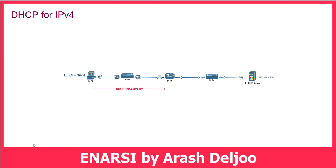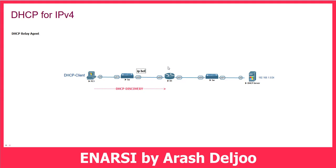Here we need to use one special feature called DHCP Relay Agent. The router should help — for example, PCs in another network — to obtain IP addresses. On the router's interface, we are configuring one command: the command is 'ip helper-address'.